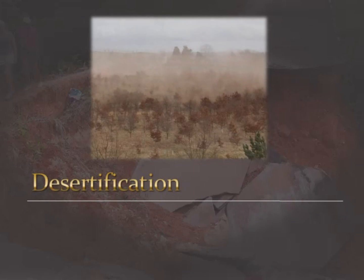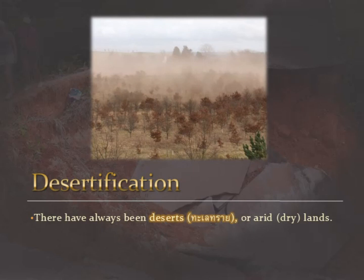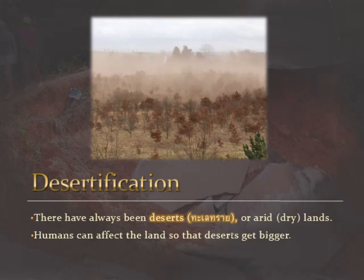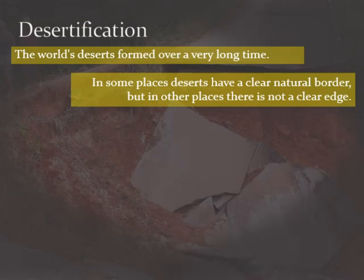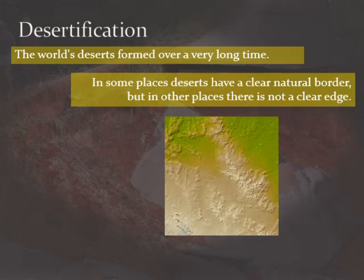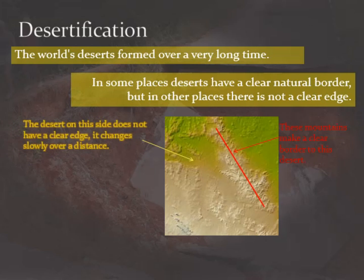Another problem that we sometimes find with land pollution is desertification. We've always had arid land on earth, but humans are affecting the land now, especially in hot countries, and that is causing areas of desert to get bigger. The world's deserts formed over a very long time, and in some places there is a clear natural border to the desert, like along this mountain range here.